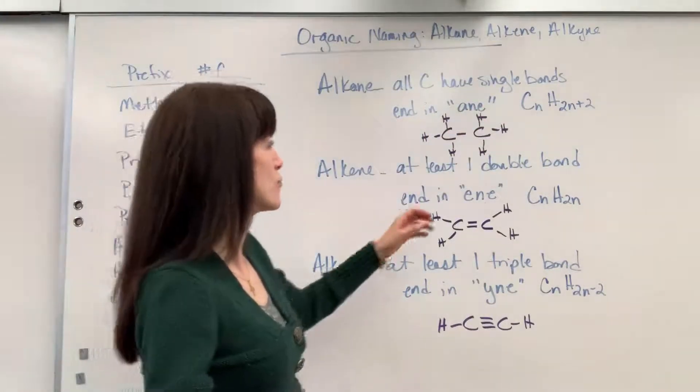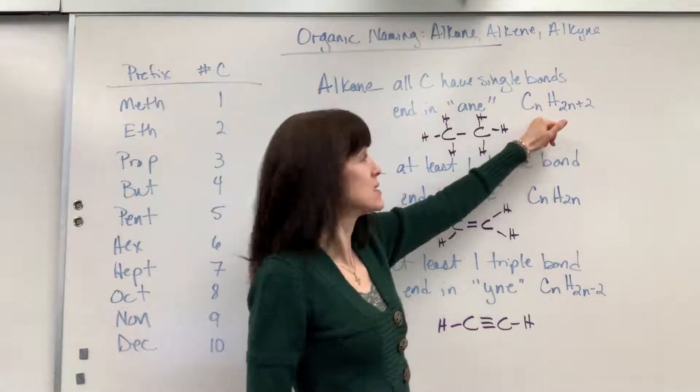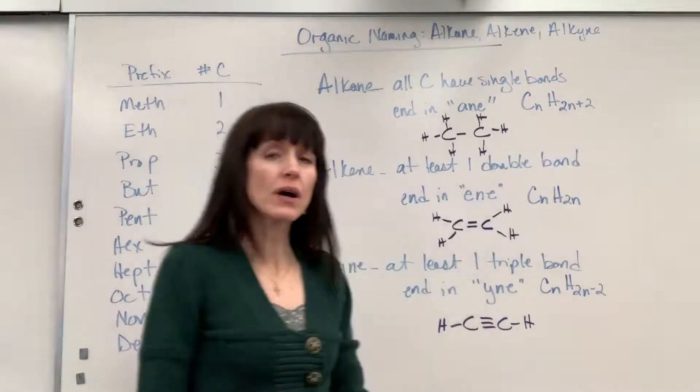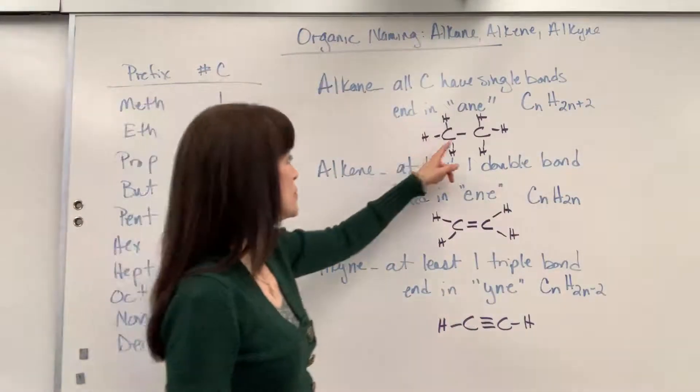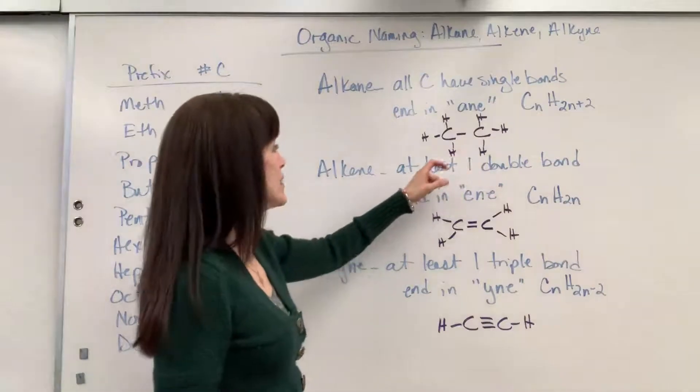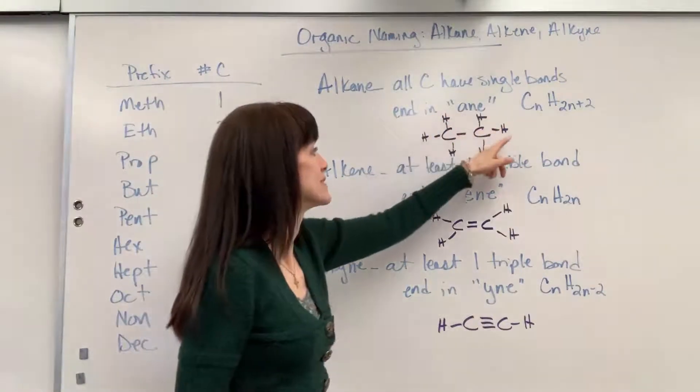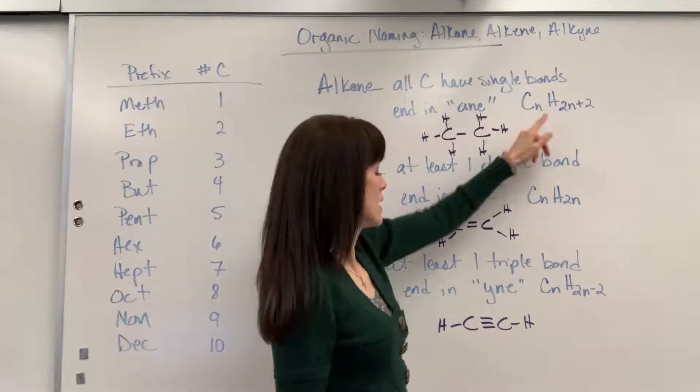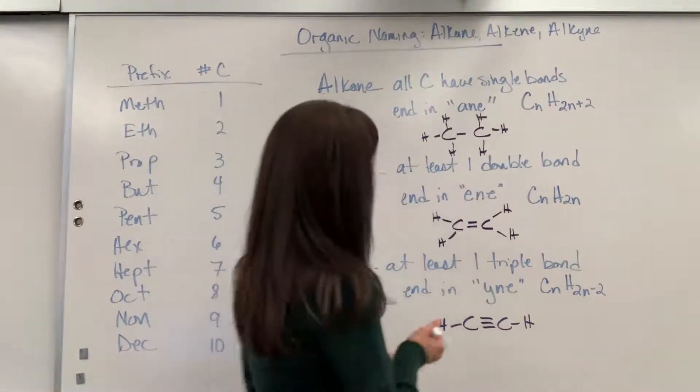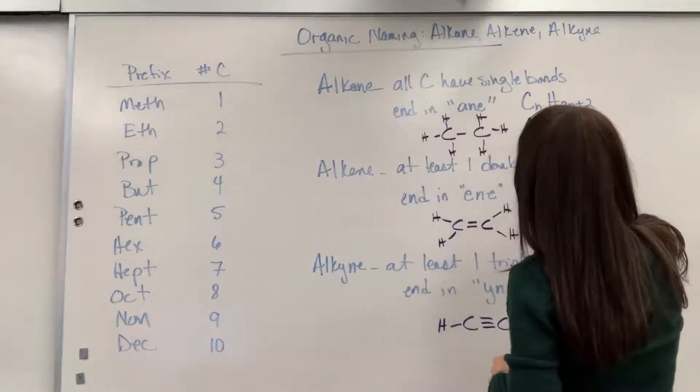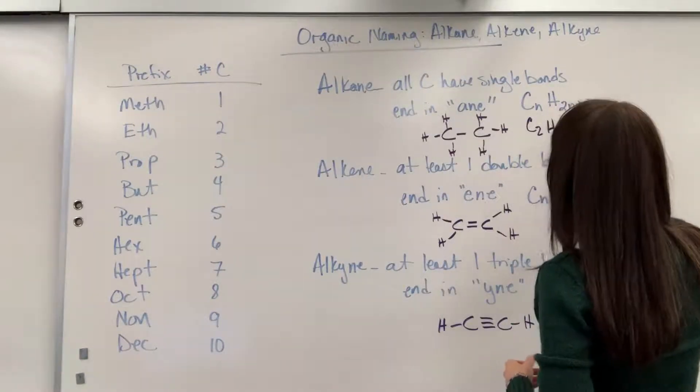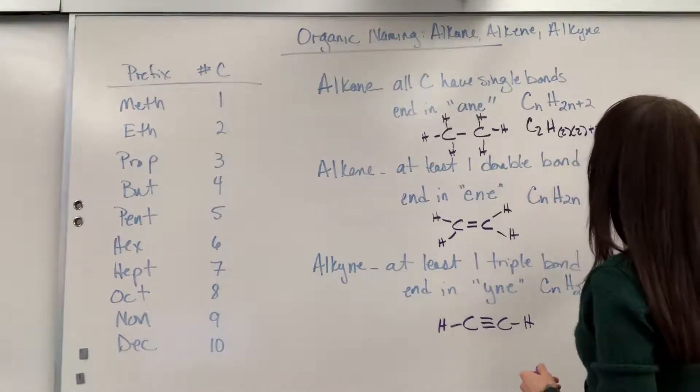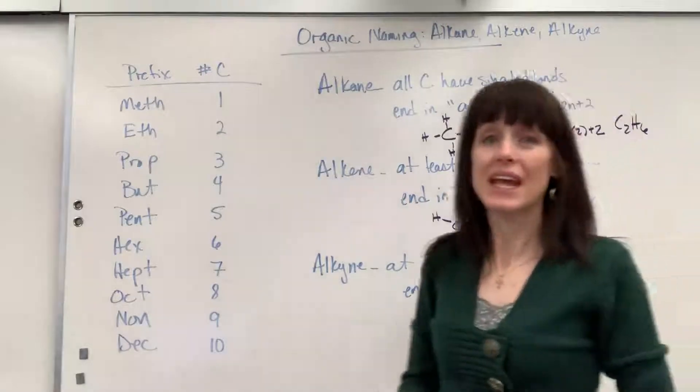It does have a general formula. N is going to be the number of carbons, so CNH2N plus 2. I went with a really simple alkane. I have two carbons, and notice you've got 1, 2, 3, 4, 5, 6 hydrogens. Look at the math right here. If I put 2 right there, so C2, let's go ahead and do this.